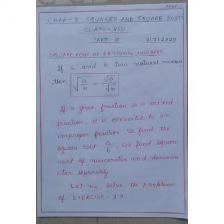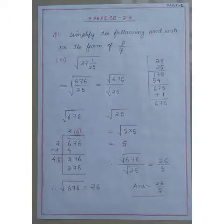Let us solve the problems of exercise 3.7 and explain it with examples. Number 1. Simplify the following and write in the form of p by q. I have taken question number 3.